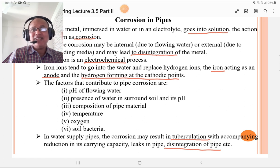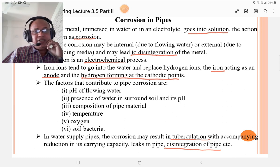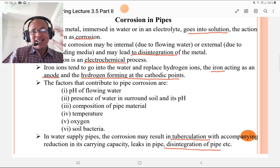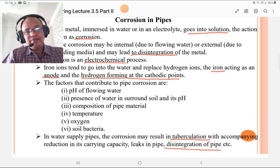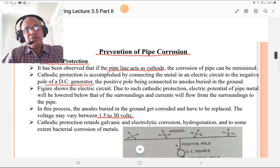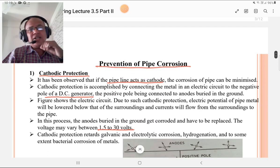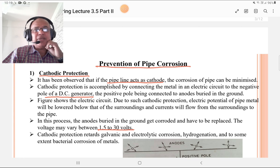We have to minimize that corrosion. In water supply lines, the corrosion may result in tuberculation with accompanying reduction in carrying capacity of water. It also causes leaks in the pipe and can disintegrate the pipe. So corrosion is dangerous.